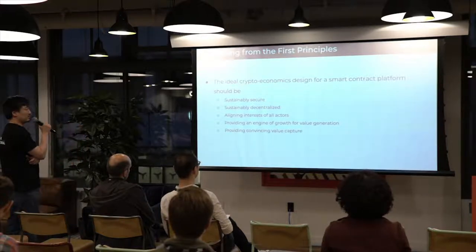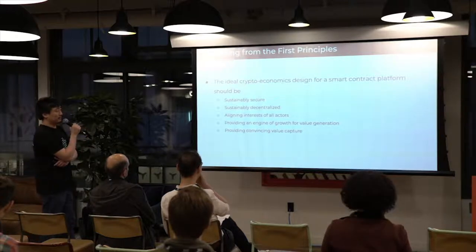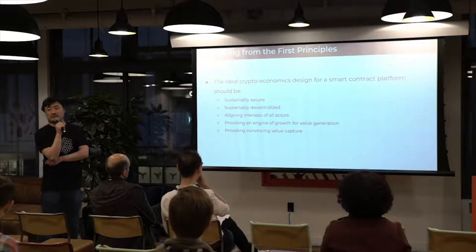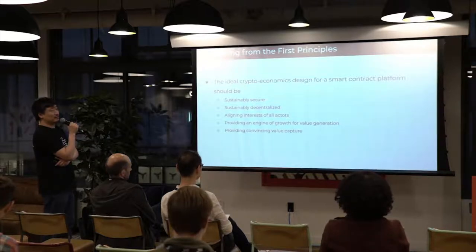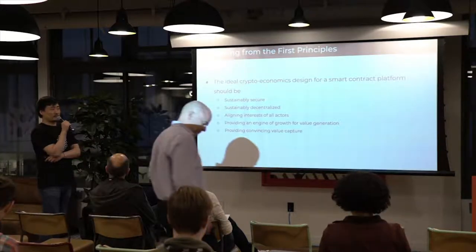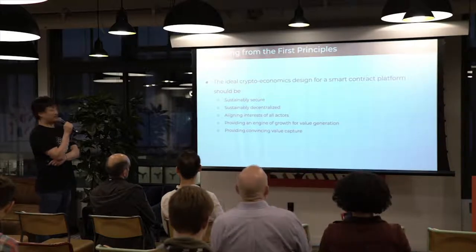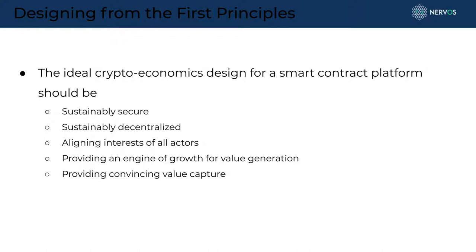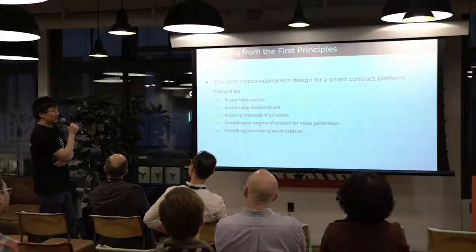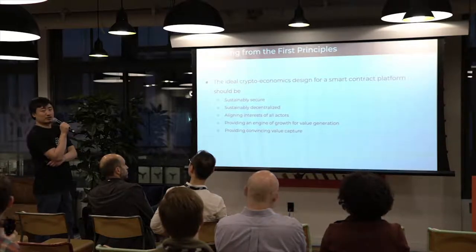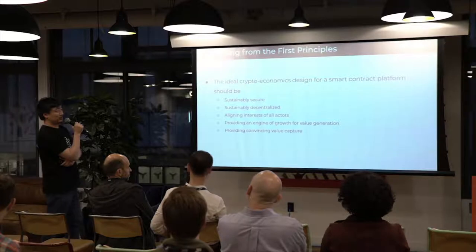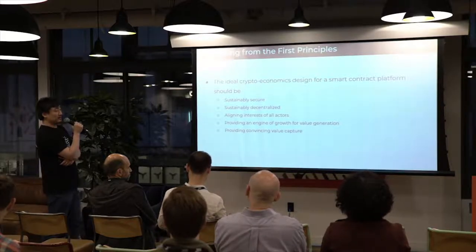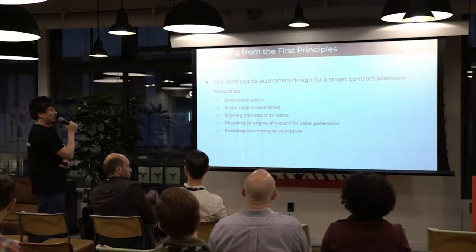We want it to be sustainably secure, decentralized, and we want to align all the interests of all the participants in the network — we want people that participate in the network to help grow the network instead of fighting each other. We also want to provide an engine of growth so the network itself can generate value. And finally, because people hold tokens hoping to capture value and see appreciation, we want to provide convincing value capture as well. These are the high-level goals when we started.